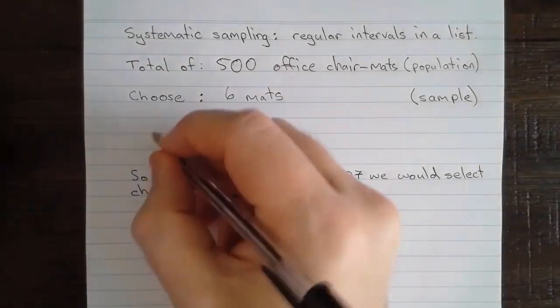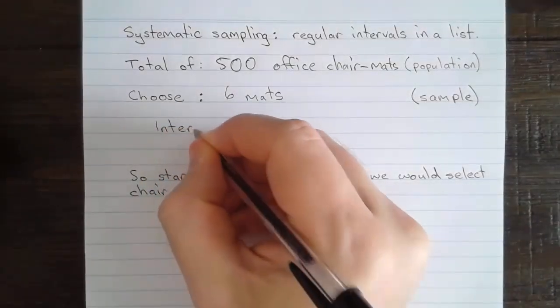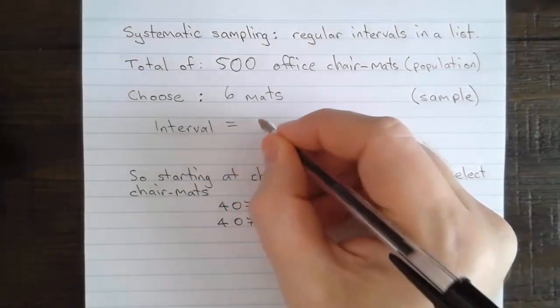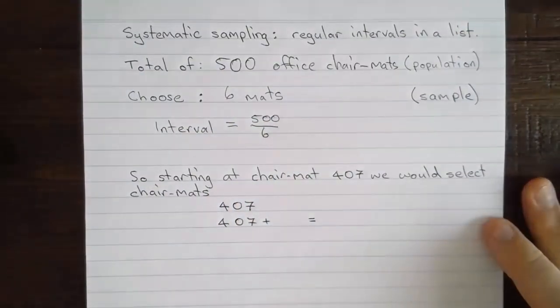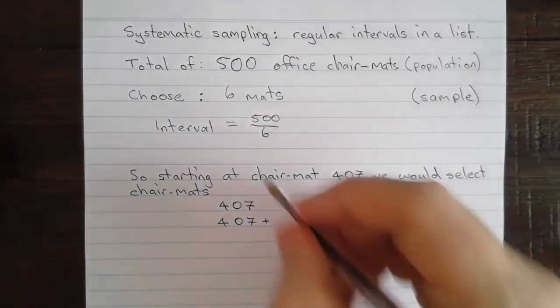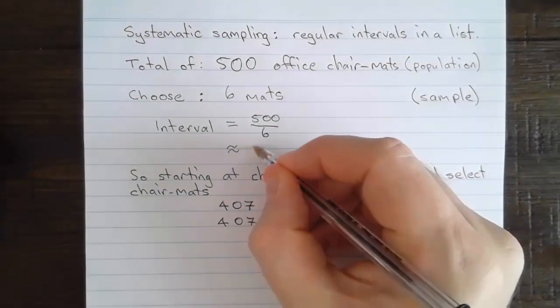Well, to figure out that interval, we're going to write that the interval is equal to the total of 500 mats divided by the number that we want to choose, which is 6. And if we go to our calculator, we'll find that that's approximately 83.